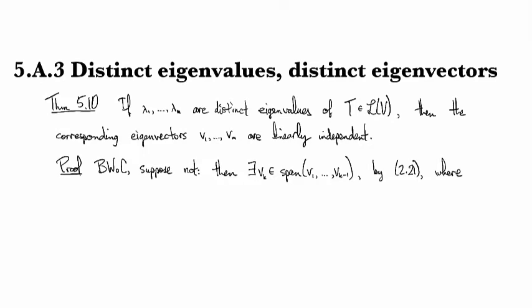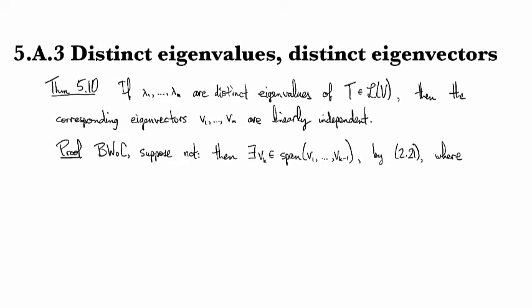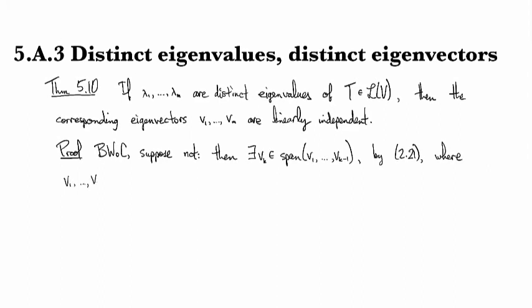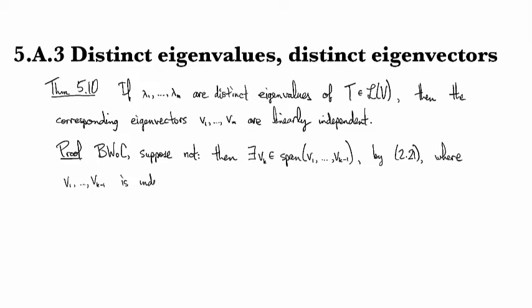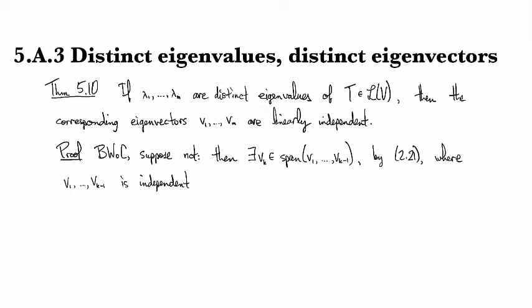And we can choose k to be the minimal index for which this happens, in which case we have that v_1 through v_{k-1} is independent. So we take k to be the first instance where adding another vector would give us a dependent set.